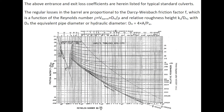The regular losses in the barrel are proportional to the Darcy-Weisbach friction factor f, which is a function of the Reynolds number and relative roughness height, with D_H being the equivalent pipe diameter, or hydraulic diameter.